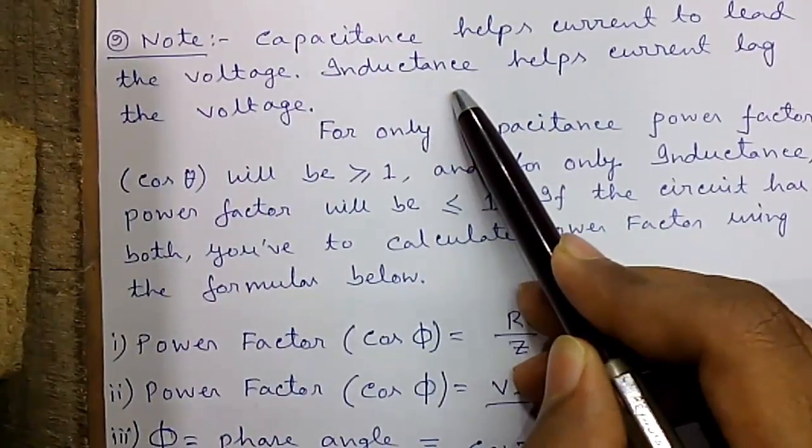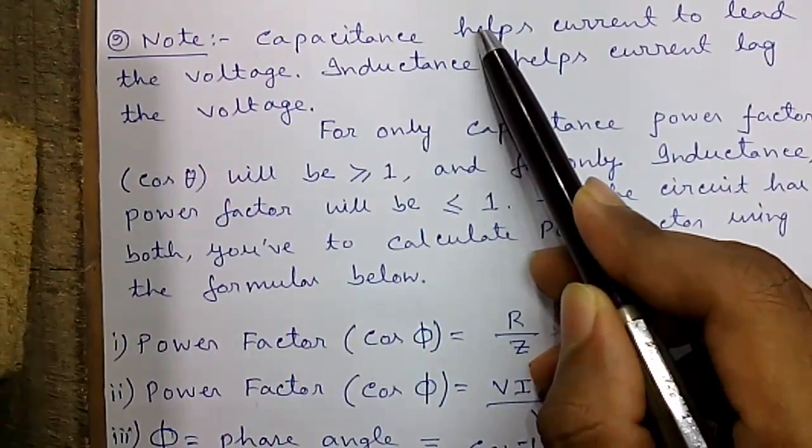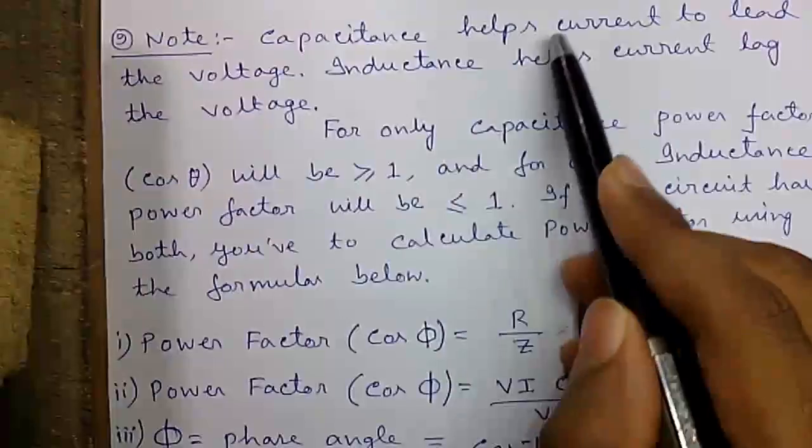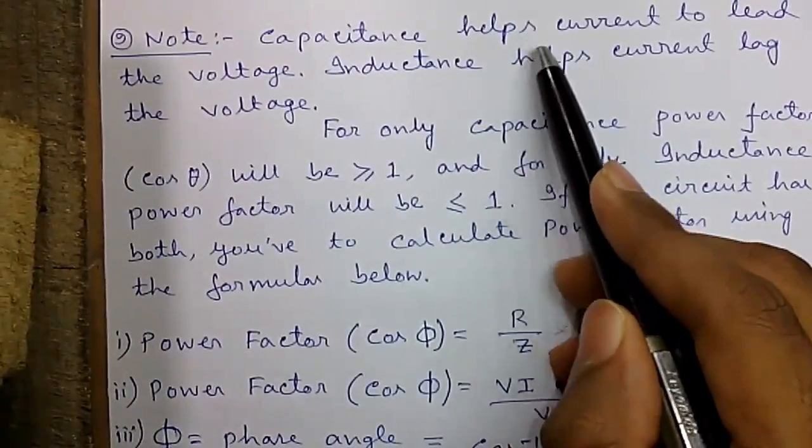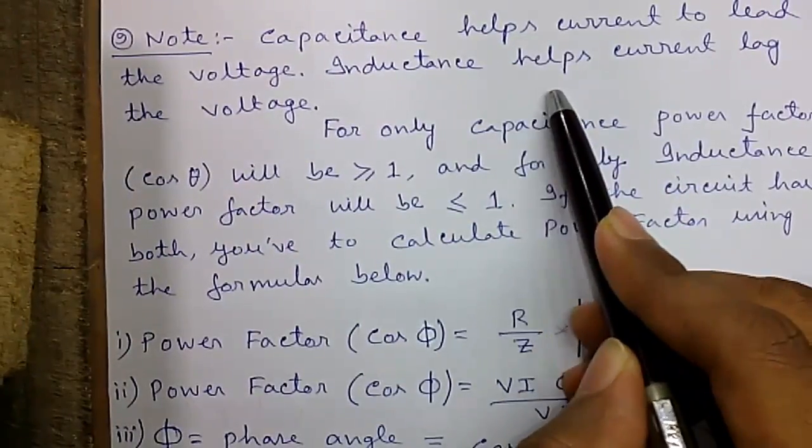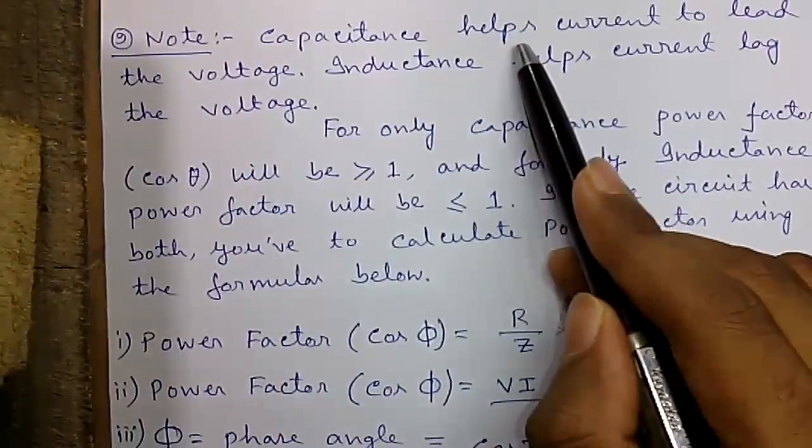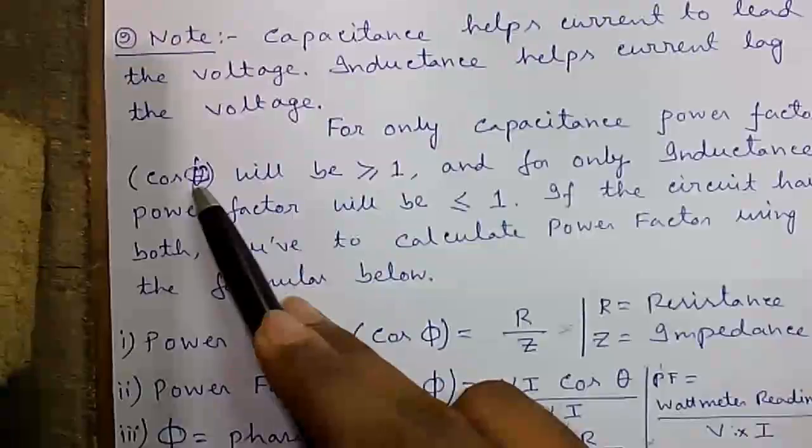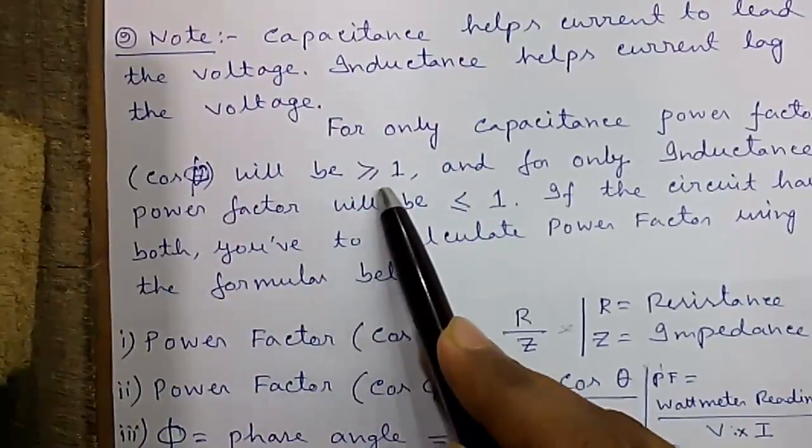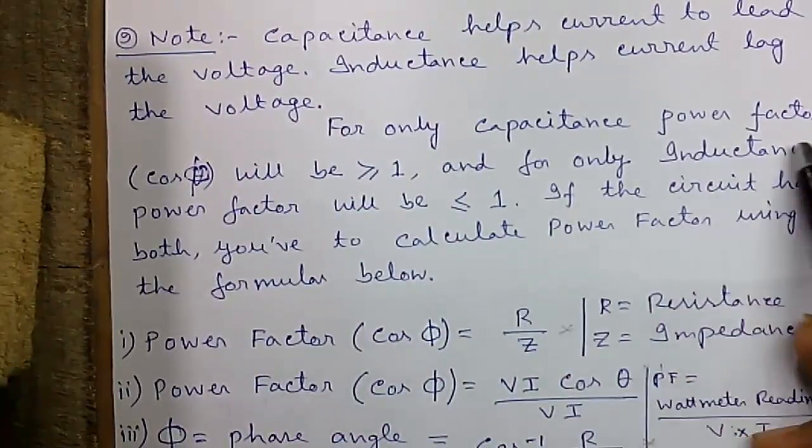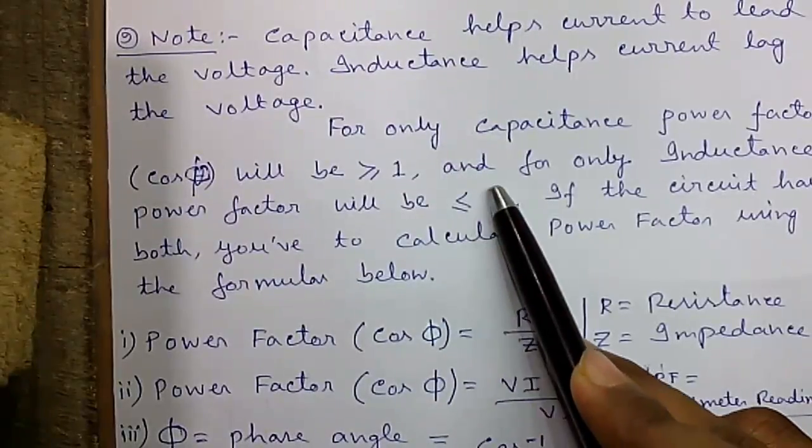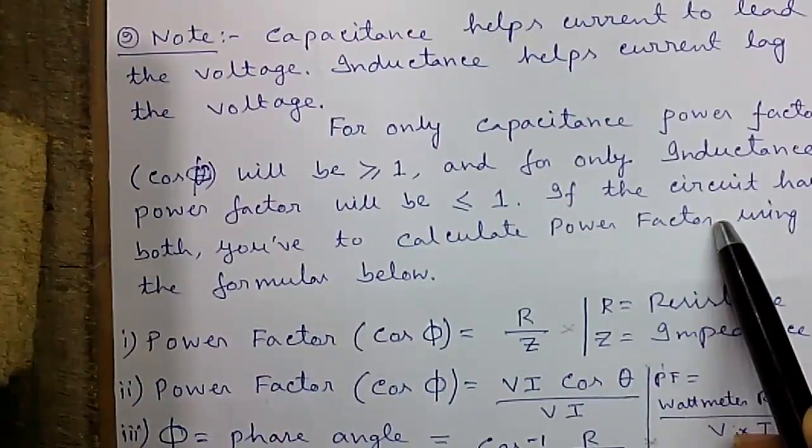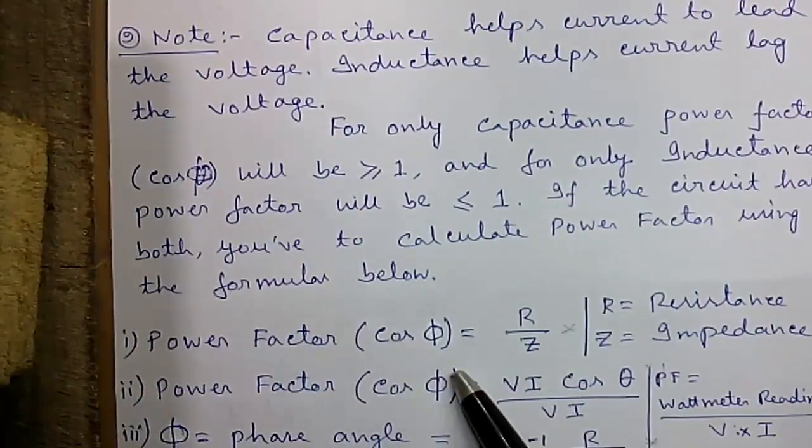Note, capacitance helps current lead the voltage and inductance helps current lag the voltage. If there is capacitance present in the circuit, the current will lead the voltage. If we plot them in graph, the current will be ahead in degrees compared to the voltage in a 360 degree pattern. For only capacitance, the power factor cos phi will be greater than or equal to 1. For only inductance, the power factor will be less than or equal to 1. If the circuit has both, you have to calculate the power factor by the formula given below.